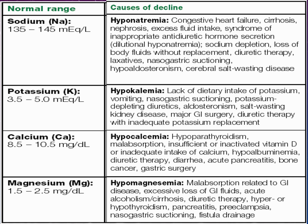On the other hand, when sodium levels are decreased — hyponatraemia — this can result from congestive heart failure, cirrhosis, nephrosis, excessive fluid intake, syndrome of inappropriate antidiuretic hormone secretion (SIADH), sodium depletion, loss of body fluids without replacement, diuretic therapy, laxative use, nasogastric suctioning, hyperaldosteronism and cerebral salt wasting. For potassium, you can end up with hypokalaemia due to lack of dietary intake of potassium, vomiting, nasogastric suctioning, potassium-depleting diuretics, aldosteronism, salt wasting, kidney disease, major gastrointestinal surgery, and diuretic therapy without adequate potassium replacement.